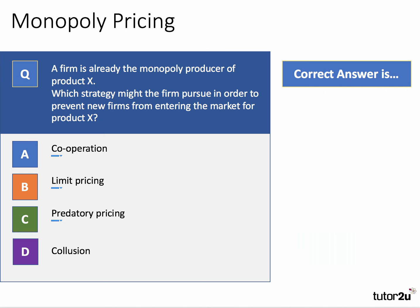Here's the third question: A firm is already the monopoly producer of product X. Which of those four strategies — A, B, C, or D — might the firm pursue in order to prevent new firms from entering the market for product X? Press the pause button, have a go at the question, think about your answer, and we'll check in a moment.